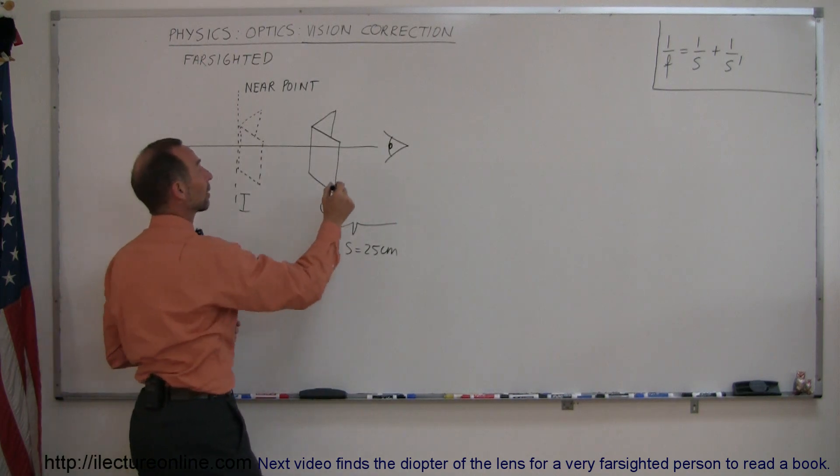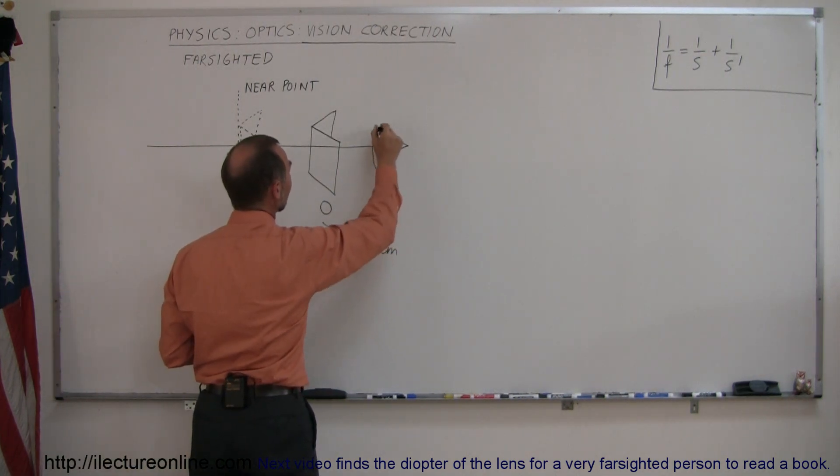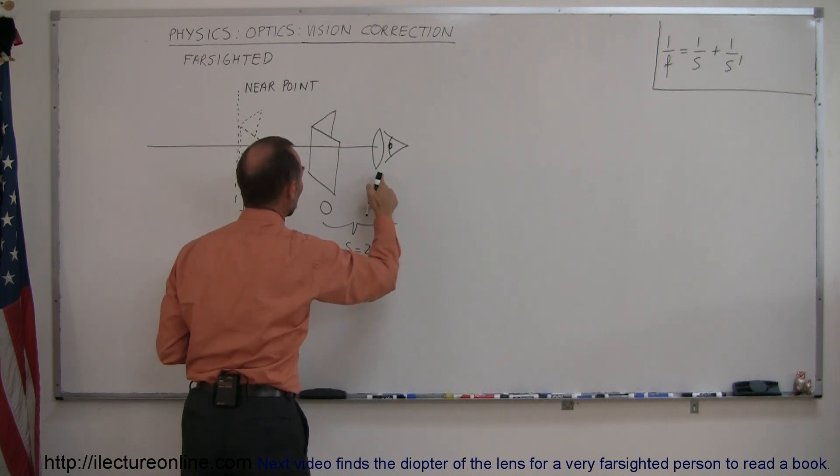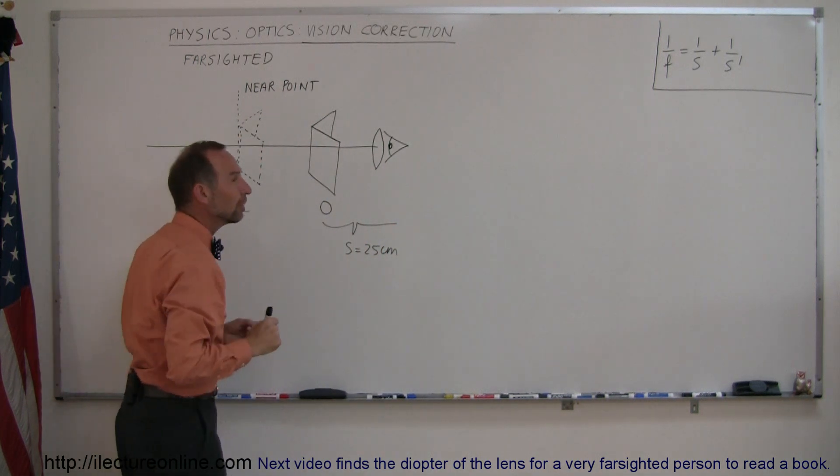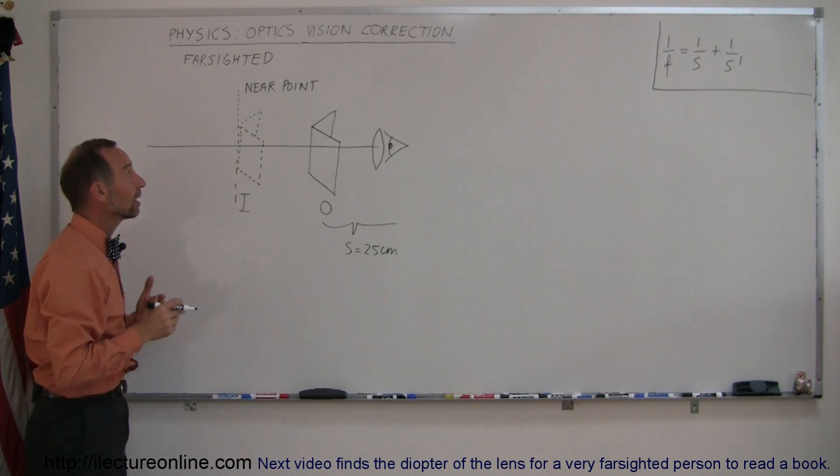So what do you need? You need corrective vision, you need converging lenses in such a way that they will form an image at the location of what we call the near point, the nearest point that you can see clearly.